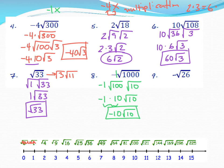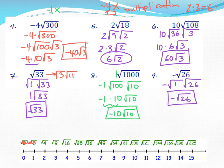Try it: -√26. The answer is just like the √33 example. You might think 2 × 13, but can you simplify √2 or √13? No. So -√26 is already simplified — leave it as is.